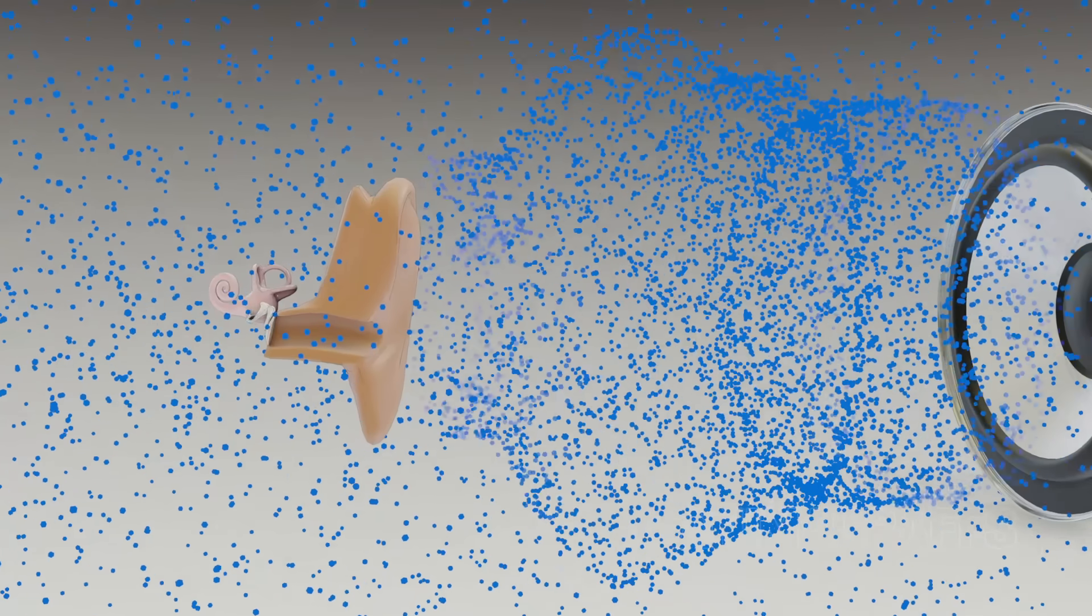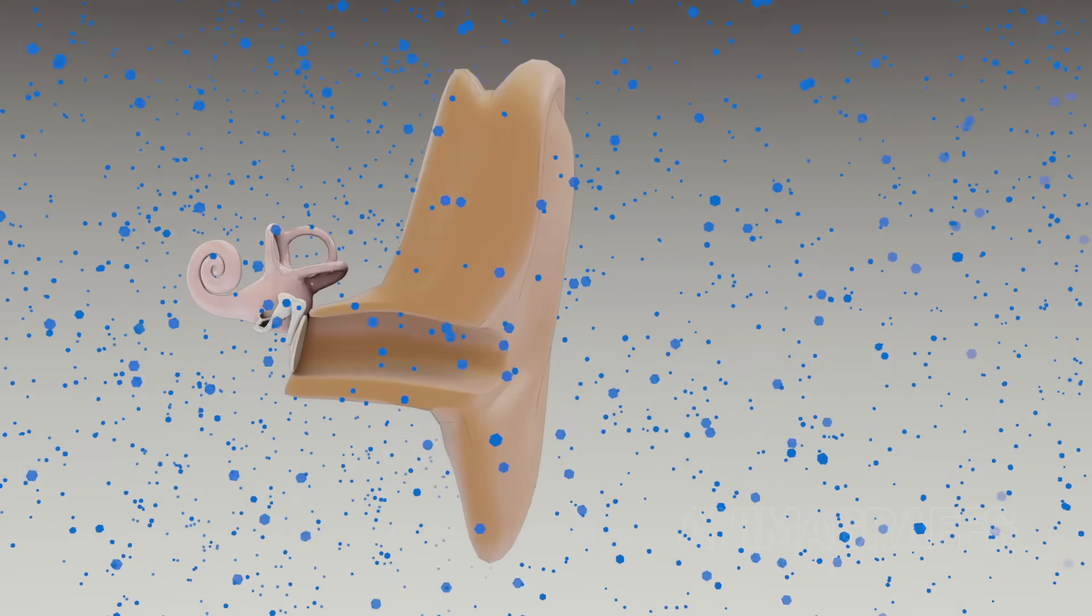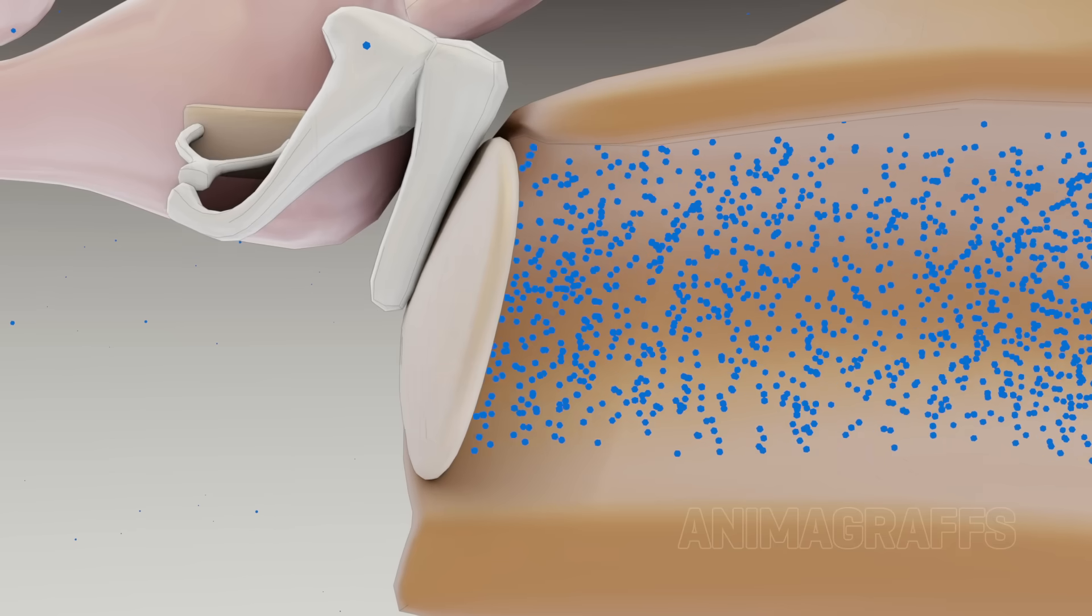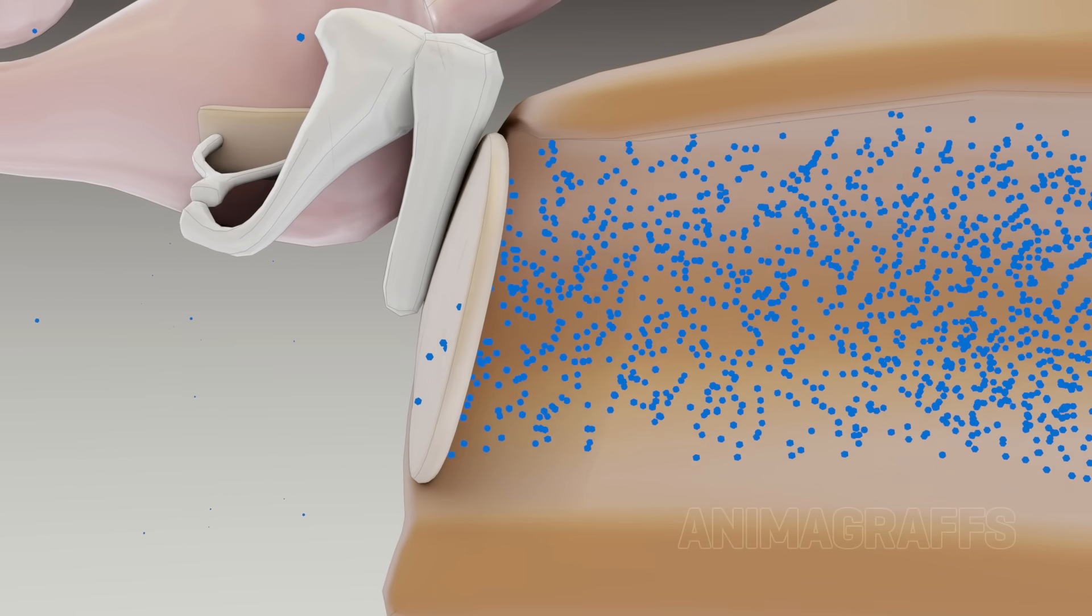This wave reaches and moves your eardrum, which sends the signal that your brain interprets as sound. You could even say that hearing is just movement detection.